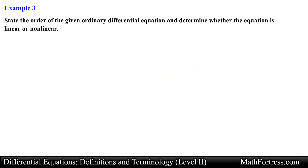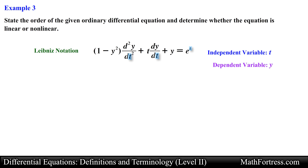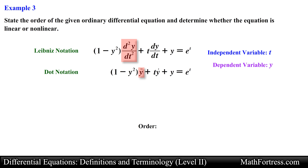Let's try the next example: the quantity (1 minus y squared) times the second derivative of y with respect to t, plus t times the first derivative of y with respect to t, plus y equals e to the power of t. Notice this ODE has t as the independent variable. When time is the independent variable, we can rewrite the equation using Newton's dot notation. This ODE has a second derivative and a first derivative, so the highest is the second derivative, making it a second order ODE.